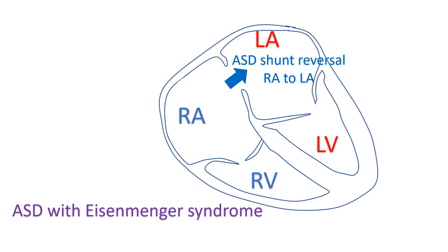The rapidity with which this complication occurs depends on the size of the initial left-to-right shunt. Development of Eisenmenger syndrome may be earlier in certain conditions like trisomy 21. In ASD Eisenmenger, the pulmonary arterial pressures can be suprasystemic.